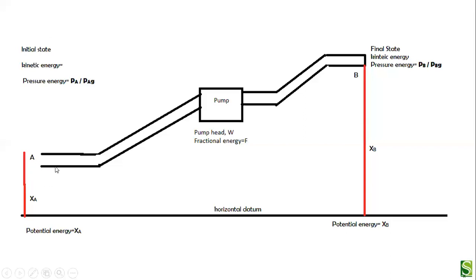When the same liquid moves through the whole length of the pipe and leaves the system at point B, it will also have that same set of energies — potential energy, pressure energy, and kinetic energy. In Bernoulli's theorem, we consider that whenever a fluid is moving in a system, the law of conservation of energy always applies, so the energy at point A will be exactly equal to the energy at point B.